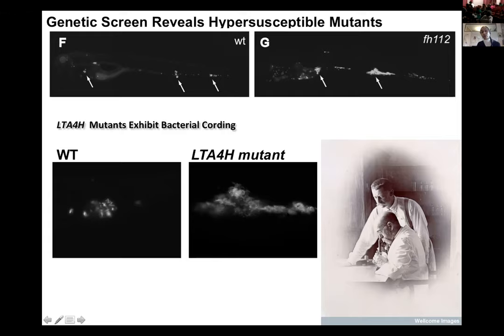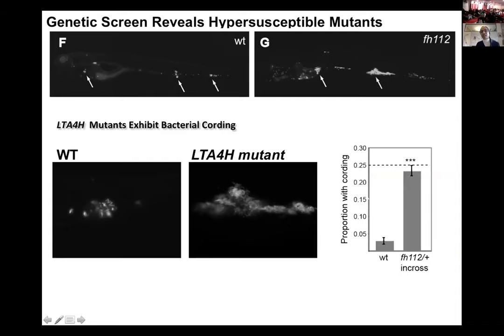David realized the bugs had caused necrosis of the macrophages, which allowed them to come together and form cords. He showed this cording was due to macrophage necrosis. More importantly, he used cording to map the mutant, because once you identify a mutant you have to do old-fashioned genetic mapping to identify where the mutation is. The cording served as a binary phenotype — cording or no cording. If you want to read about the mapping strategy, see Tobin et al., 2010.